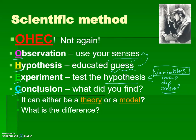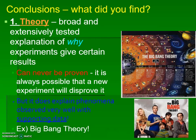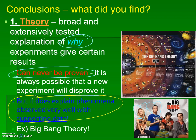And then you have your conclusion, where you come up with the finding. That conclusion is either a theory or a model. The scientific theory — the most famous one — involves Sheldon Cooper and Penny from The Big Bang Theory. The scientific theory is this broad, extensively tested explanation of why your results are the way that they are. It can never be proven beyond a shadow of a doubt, but it does explain all of the natural phenomena and it has supporting data. So it's not just a wild guess.